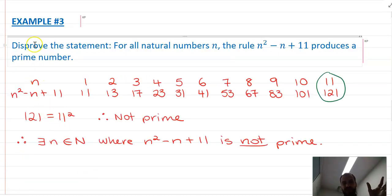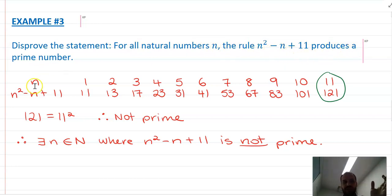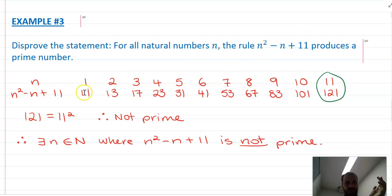Here's a simple example: disprove the statement 'for all natural numbers n, the rule n squared minus n plus 11 produces a prime number.' You go through them — put 1 in, put 2 in, put 3 in — you get prime, prime, prime, prime, prime, prime, prime, prime... not prime. I've just disproven your statement.